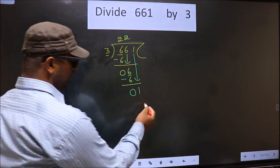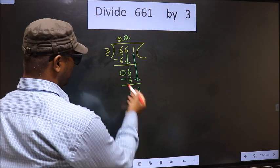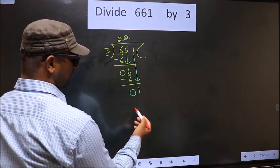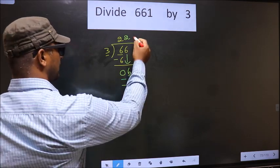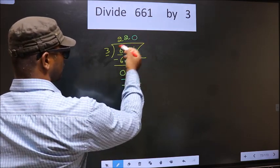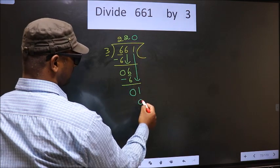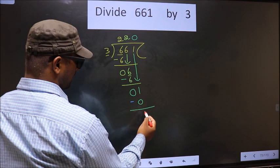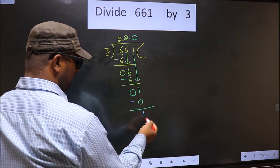Instead, what you should think of is what number should we write here? If we write 3 here, that is larger than 1, so what we do is we take 0 here. So 3 into 0 equals 0. Now you subtract 1 minus 0 equals 1.